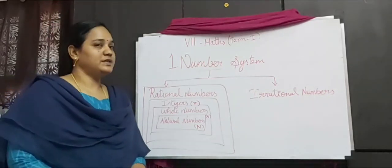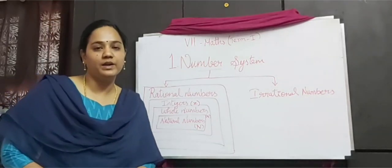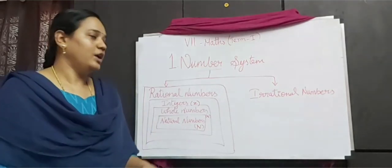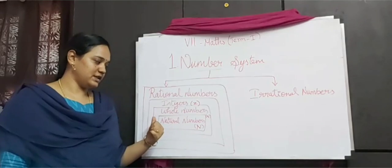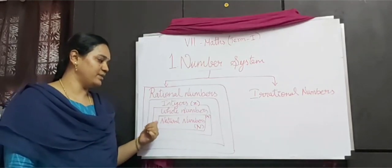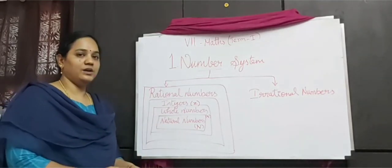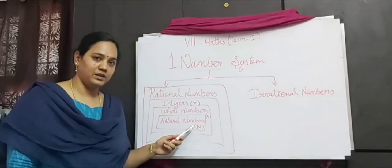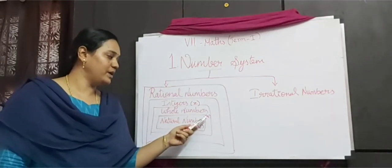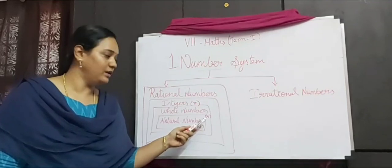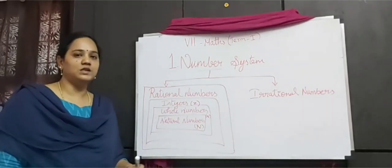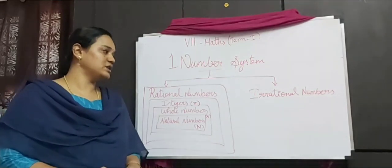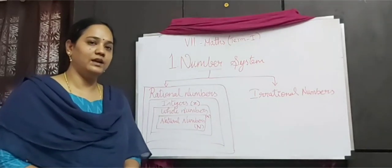Number system is defined as how a number can be represented using distinct symbols. In your previous class you might have learned natural numbers and whole numbers. Natural numbers are usually denoted by capital N and whole numbers by capital W. Now in this term we are going to learn about integers, which are usually denoted by capital letter Z.